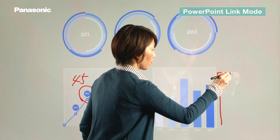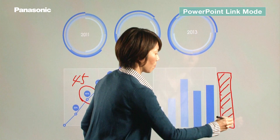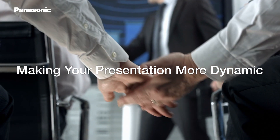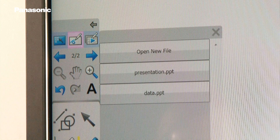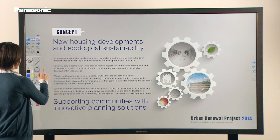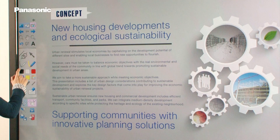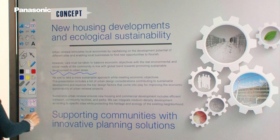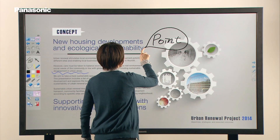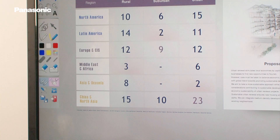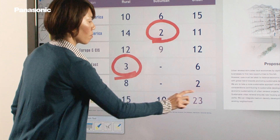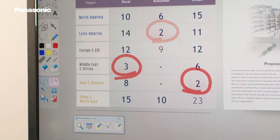PowerPoint link mode lets you write and draw on documents and save them in PowerPoint format. Select the PowerPoint document you want to open from the PowerPoint link mode button. It's easy to navigate forward and backwards. You can write comments and highlight information using the drawing tools. Present your ideas clearly using the included graphics tools. The fade-out marker tool automatically removes notes made on screen, smoothing the flow of your presentation.